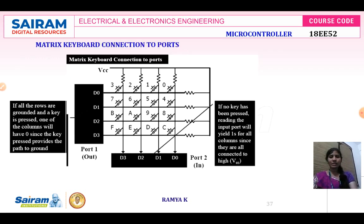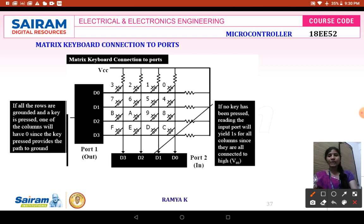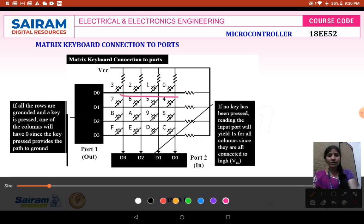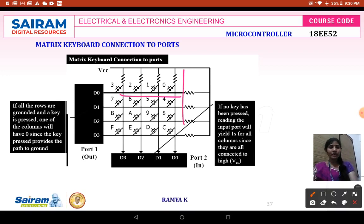This diagram shows the matrix keyboard connection. It comprises four rows and four columns. We have connected pull-up resistors since it is not compatible with TTL logic. If not compatible with TTL logic, you need a pull-up resistor or an interfacing chip like MAX232. When a row and column are connected and a key is pressed, they make contact; when not pressed, it remains open.